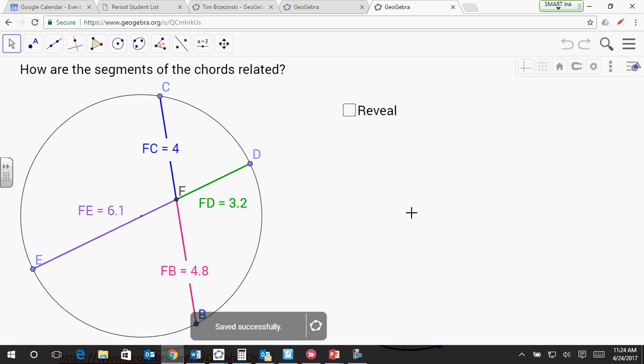And the different segment measures that you can end up with. If you notice, I have this purple segment. It goes from E to F, and it has a length of 6.1 to one decimal place. And I have FD, which has a length of 3.2. And I have CF, which has a length of 4. And I have FB, which has a length of 4.8. Now, looking at those numbers, can you see any kind of relationship between them?